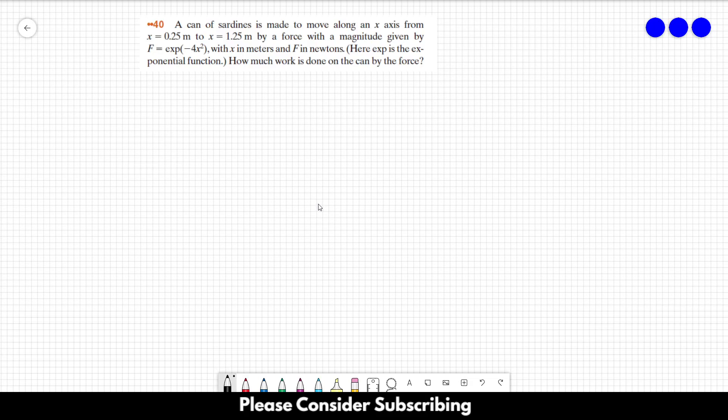Problem 40: A can of sardines is made to move along an x-axis from x = 0.25 meters to x = 1.25 meters by a force with a magnitude given by f = e^(-4x²), with x in meters and f in newtons. How much work is done on the can by the force?